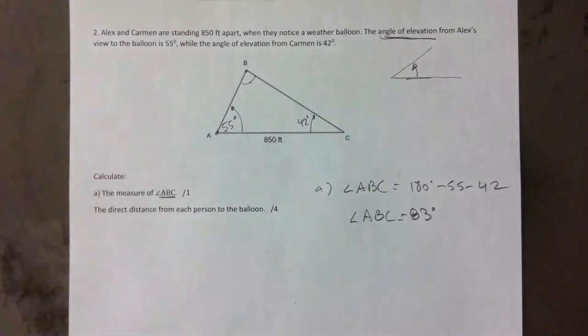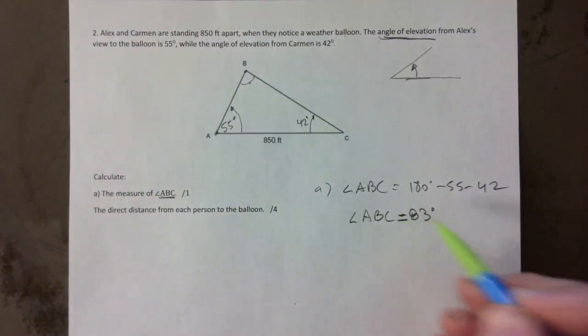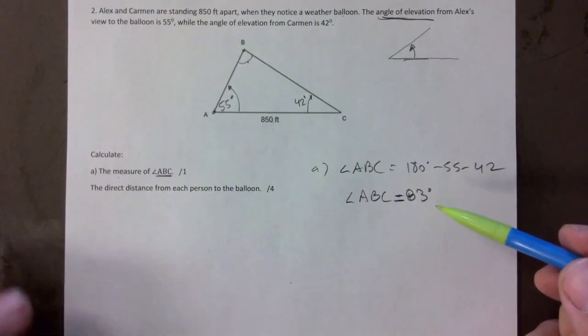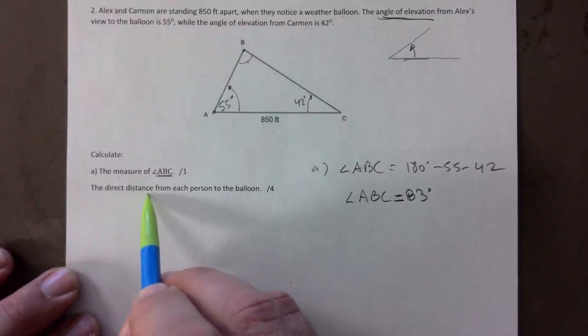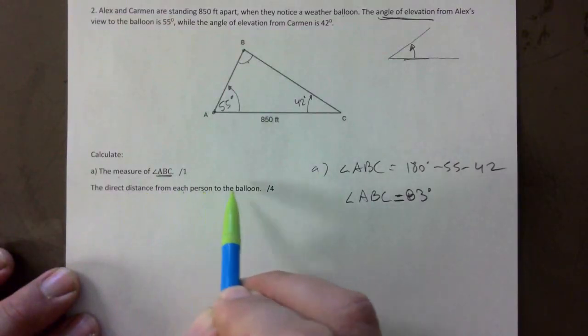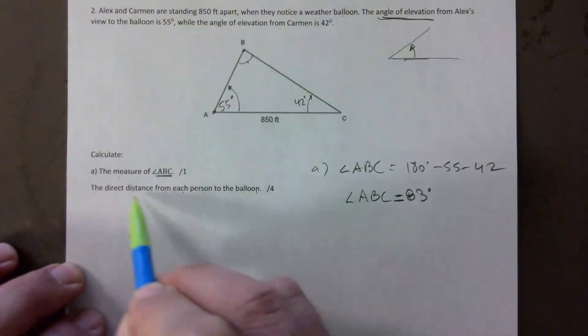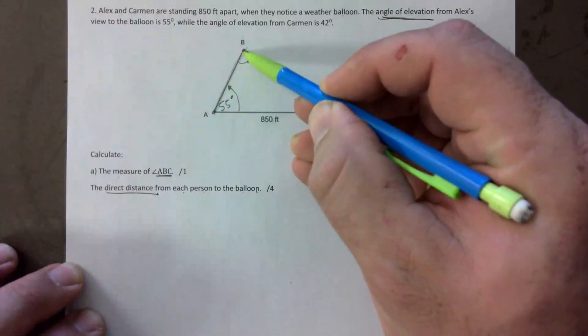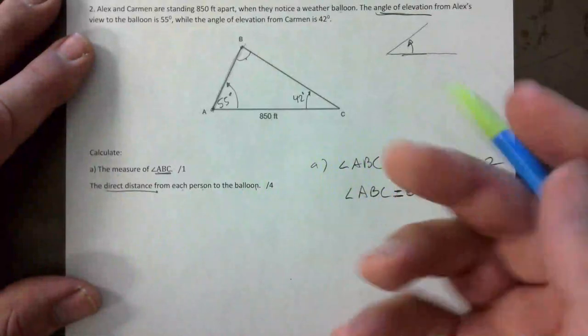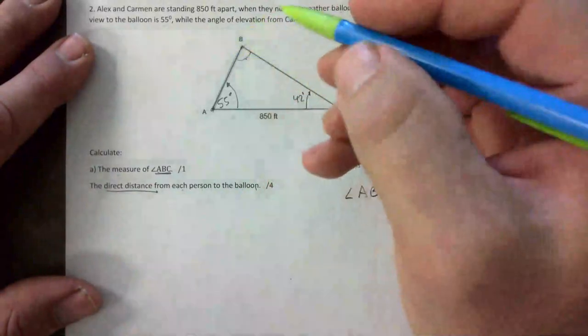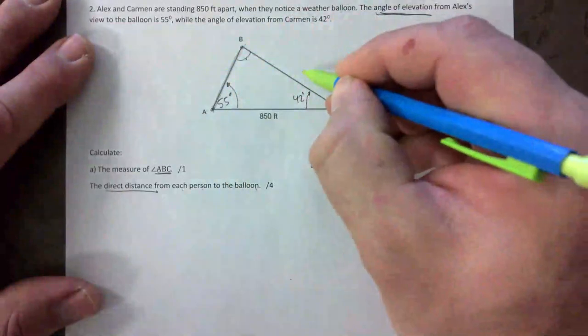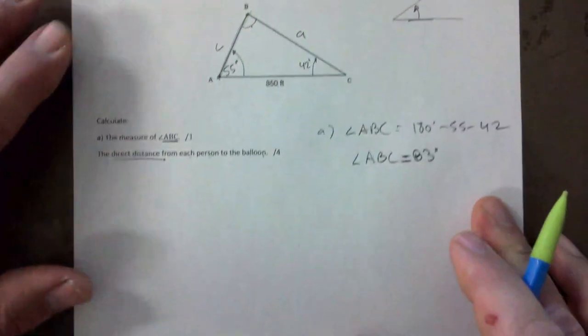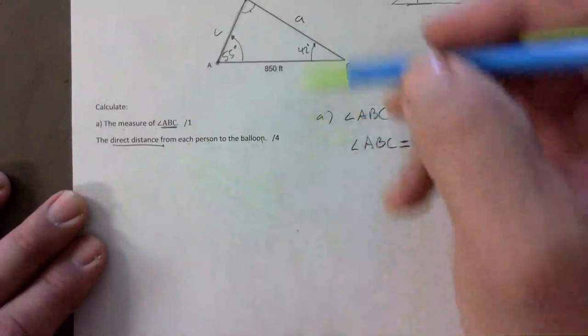Is going to be found by going 180 minus 55 minus 42 and that's 83 degrees. So if you have that you get a mark, right. But that is every time you have to do this and they ask for it, that's a mark right there. The direct distance from each person to the balloon. Direct distance, right, it means like right, like if you were to just go straight to it. So let's call this, give it some letters. I don't know you can call this x and y, that's what they're asking for. You can call this c and a, it's up to you, I don't really care what you did there.